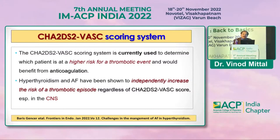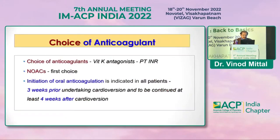If thrombosis risk is high, anticoagulation is started immediately. Vitamin K antagonists are preferred, requiring PT/INR monitoring. NOACs (novel oral anticoagulants) are the first choice if the patient can afford them, though they are relatively more costly. Oral anticoagulation should be initiated three weeks prior to planned cardioversion and continued four weeks after.